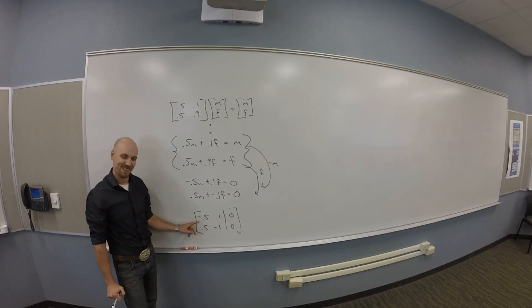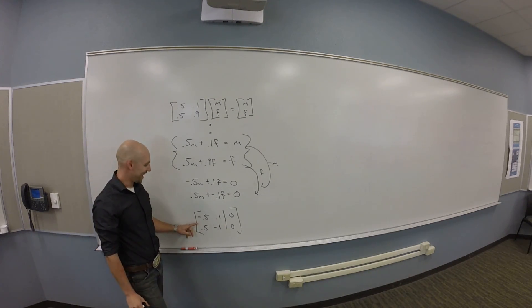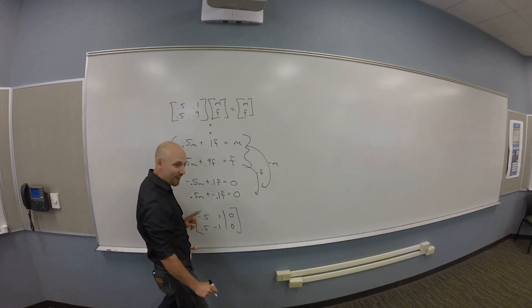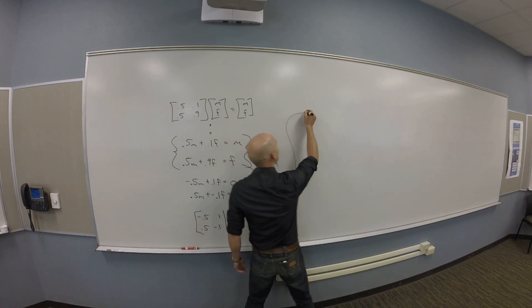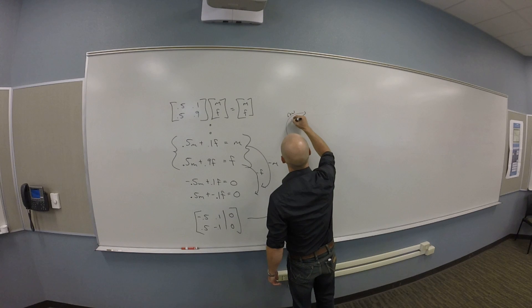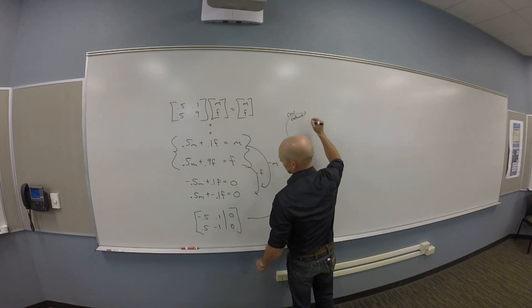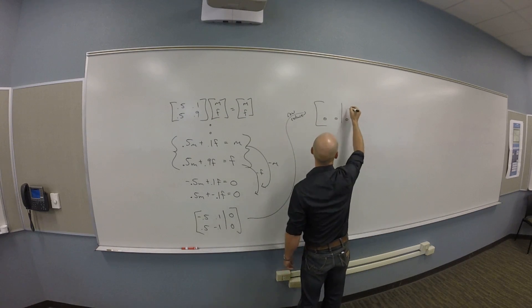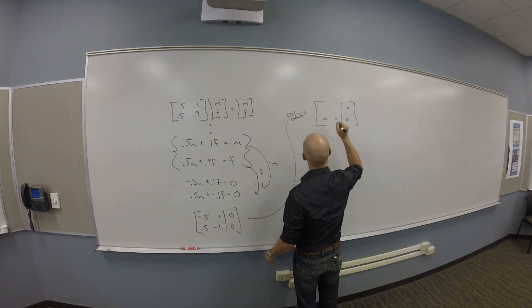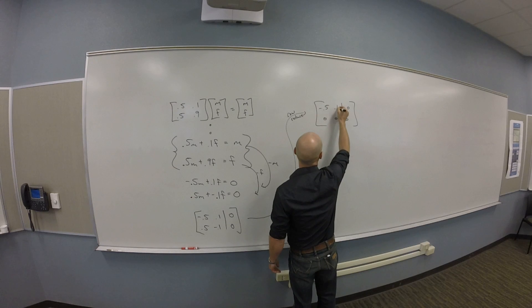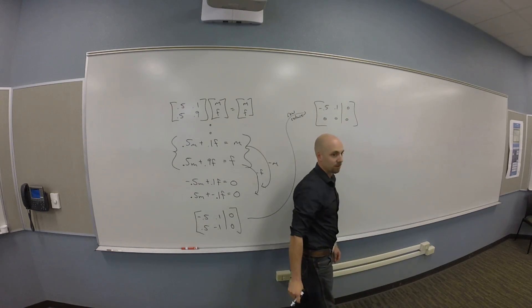It's called this. That's what salad is usually made out of. That's reasonable. Okay. So if I row reduce this thing, I'll get a last row of zeros, right? And a top row that's got a minus 0.5 and a 0.1.